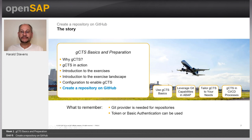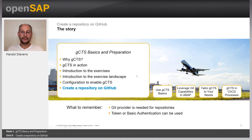What have you learned? A Git provider is needed for repositories, and we have chosen GitHub for these exercises. Authentication will later use a token, but basic authentication with user and password would also be possible — both can be stored in the GCTS credential store. This concludes this unit and also concludes this week. Thanks so much for joining, and hope to see you next week.